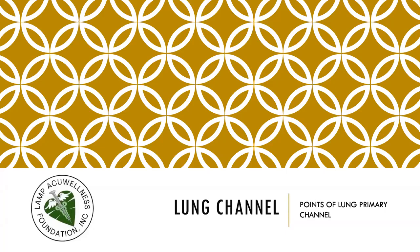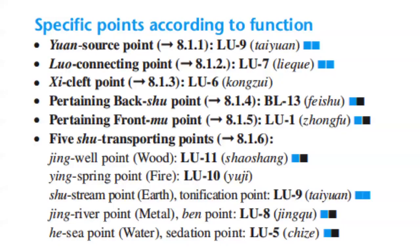Now let's discuss the points of the Lung Primary Channel — specific points according to function. The Yuan Source point is Lung 9. The Luo Connecting point is Lung 7. The Xi Cleft point is Lung 6. The pertaining Back Shu point is Bladder 13.